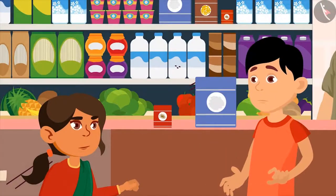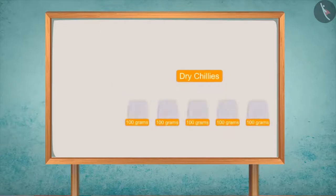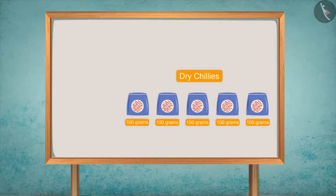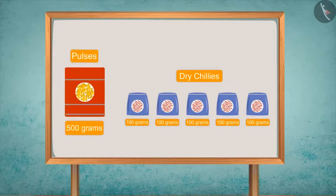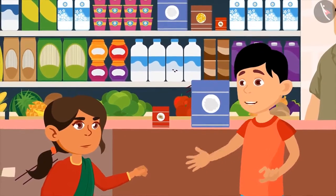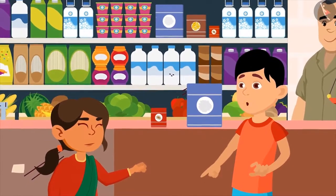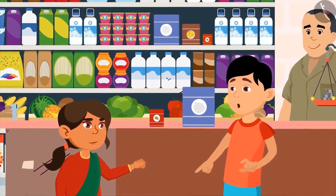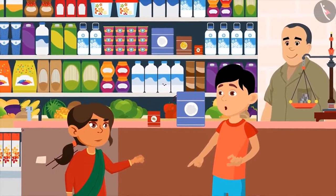Neetu, you are getting very smart. Yes, brother! Like this, 5 packets of 100 grams dry chilies weigh the same as 500 grams of pulses. Dry chilies are lighter than pulses, so 5 packets of 100 grams dry chilies is equivalent to 1 packet of 500 grams of pulses. On adding 5 packets of 100 grams, you get 500 grams. While comparing the weight of items, it doesn't depend on the number of items; instead, it depends upon the measuring units of weight.